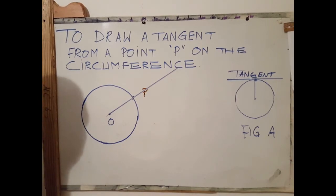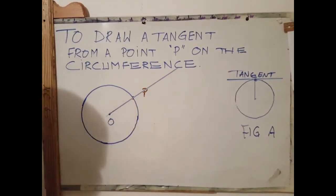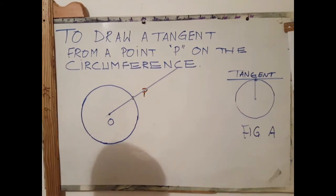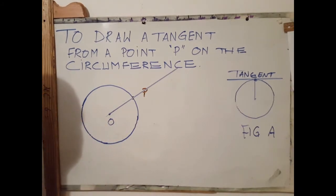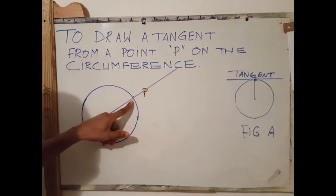The second step is to construct a perpendicular line at point P, which is here. A perpendicular line is a line that meets, passes, or touches a point at 90 degrees.